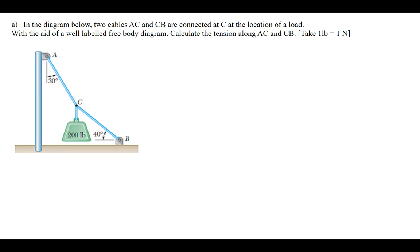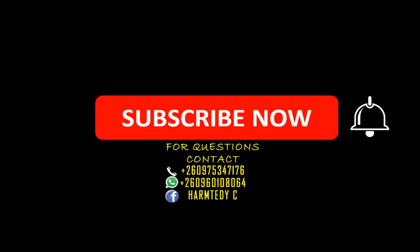In today's tutorial we're going to discuss this question, finding the tension in AC and CB. We take one pound to be equal to one newton. The question states: in the diagram below, the cables AC and CB are connected at C at the location of the load. With the aid of a free body diagram, calculate the tension along AC and CB.